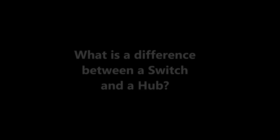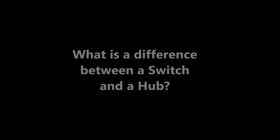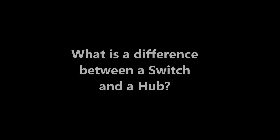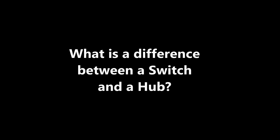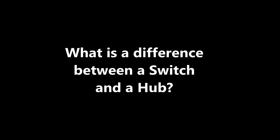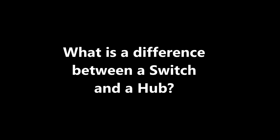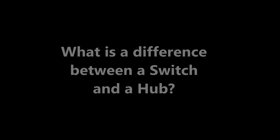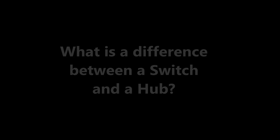Question number eighteen: what is the difference between a switch and a hub? With a hub, when multiple computers are connected, all the data connection speed is shared among them — a computer demanding full speed will get all the speed, causing all other connected computers to slow down. A switch, on the other hand, allows multiple computers to run at optimum speed simultaneously, so all computers connected to a switch can potentially run at full speed for each of their data streams.